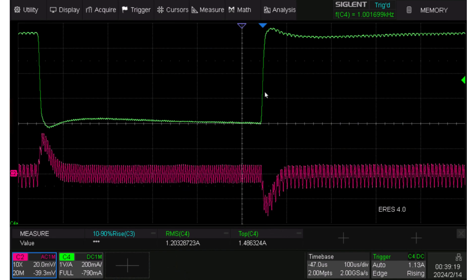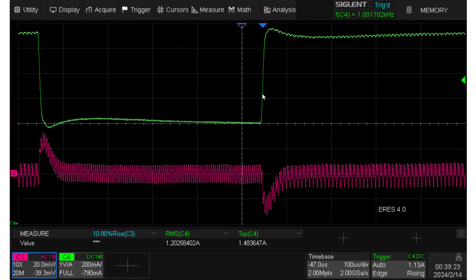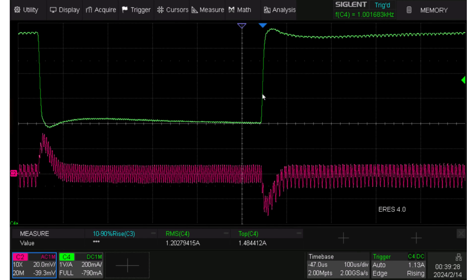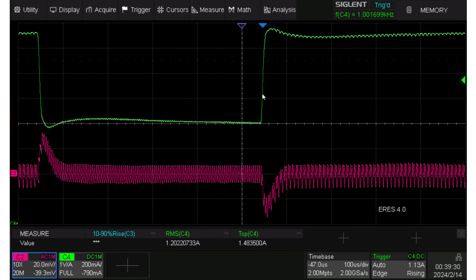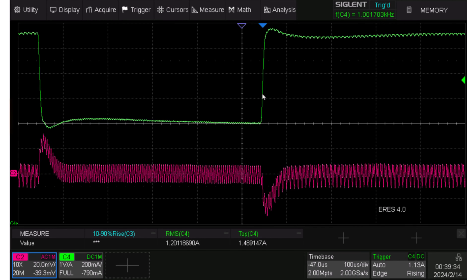Here the green trace is the load step that I am giving it to, given the power supply with my active load and the red trace is the output voltage on AC coupling. So I'm only looking at the transient response and how quickly it is recovering.